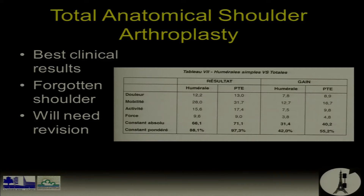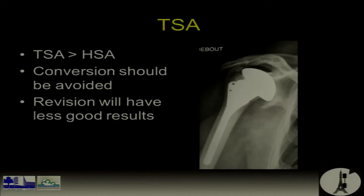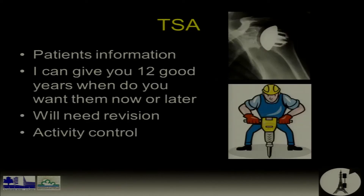So if you want to do the best for your patients, you have to put a total. The problem is that totals do better than hemi, but you will have to revise them — these patients are young. But I prefer to revise a total than to revise a hemi with severe glenoid erosion. In my hands, that's the worst case — incredibly hard to revise — and the only solution is to put a reverse prosthesis. It's a matter of a contract with your patient: I tell my patient, 'I can give you 12 good years — when do you want them, now or later?' Because the second shoulder arthroplasty is not like in the hip; the second one is not as good as the first.